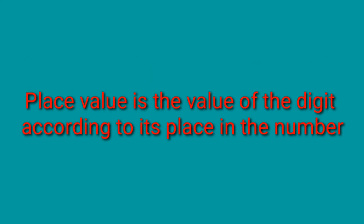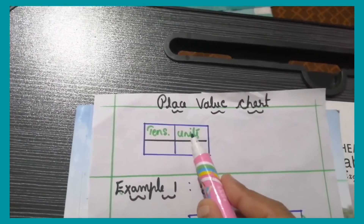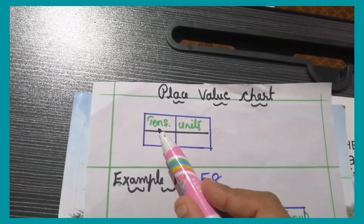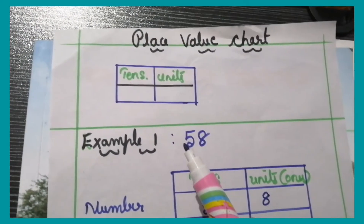Now let's learn about the place value of two digit numbers. What is place value? A place value is the value of the digit according to its place or position in the number, such as 1s and 10s. This is the place value chart. Here there are two columns: the first column represents units and the second column represents 10s.